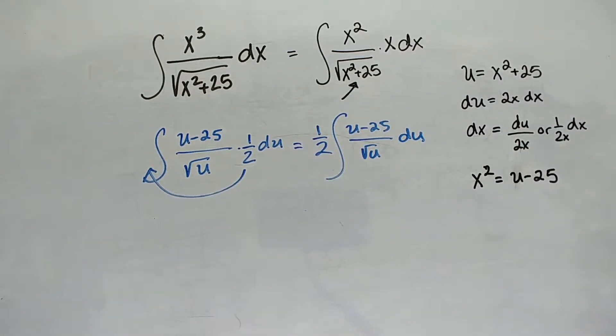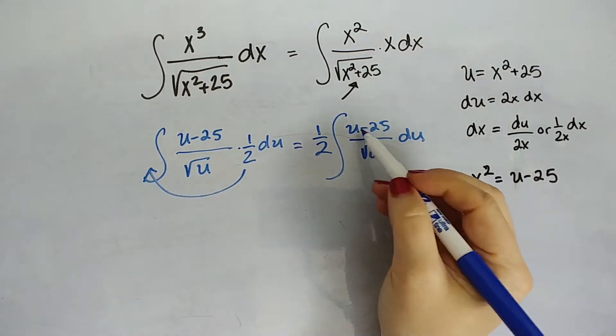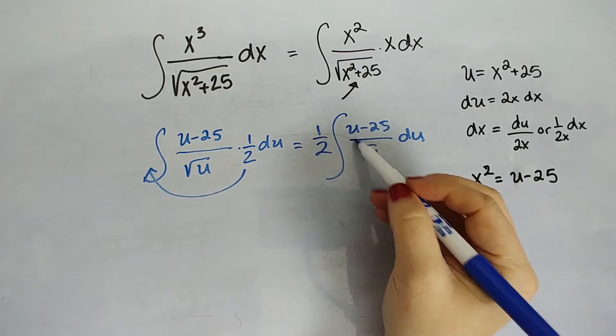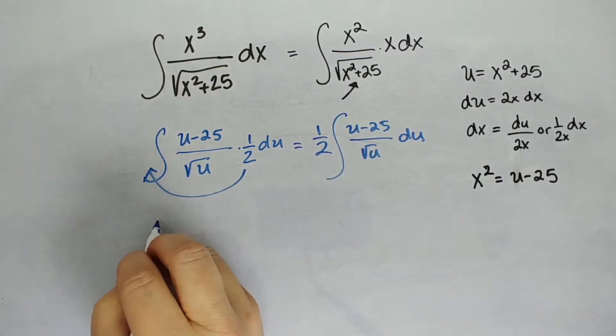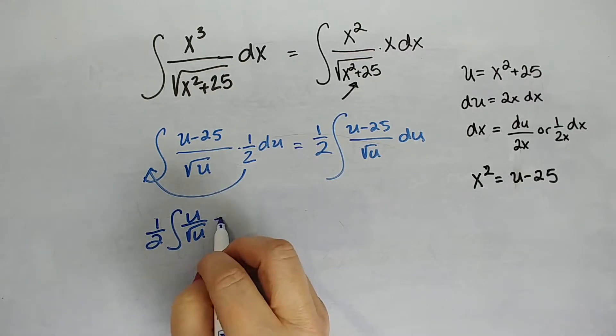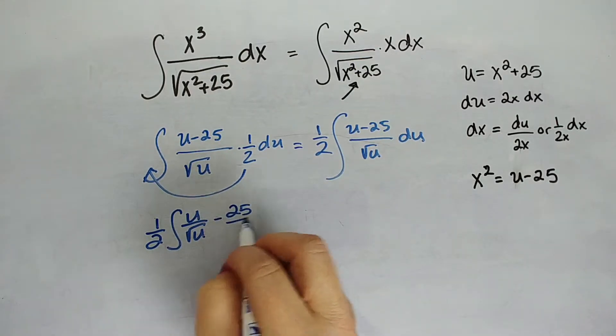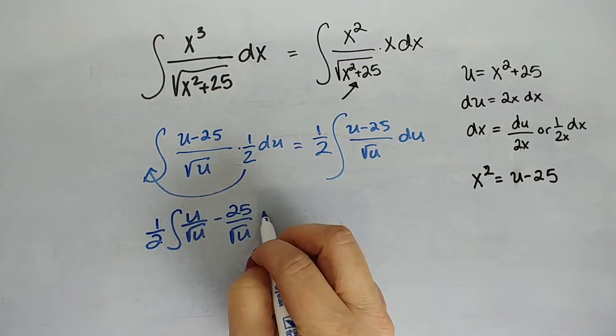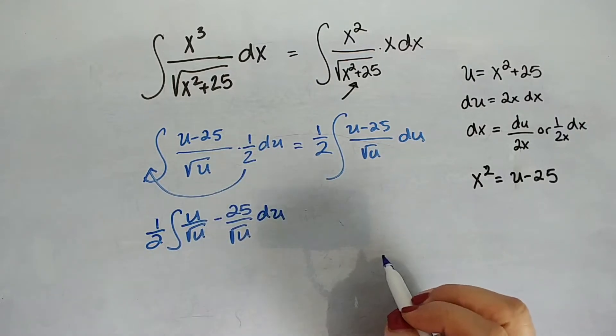Okay. That actually looks like somewhere I can go. I can definitely do something with this. Let's break this up though. Let's take this one big fraction, make it 2. So we're going to say 1 half and we're going to say u over the square root of u, which is going to be u to the 1 half. Minus 25 over the square root of u. All du. Don't forget our du. I'm infamous for losing du's.